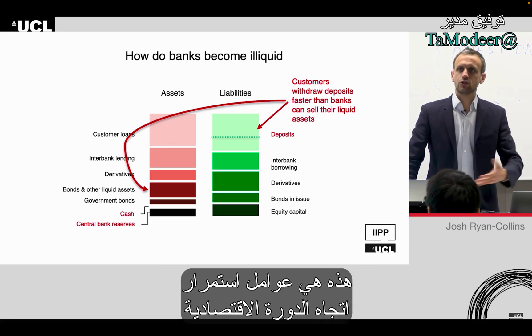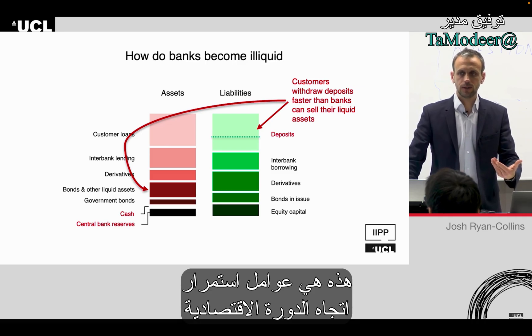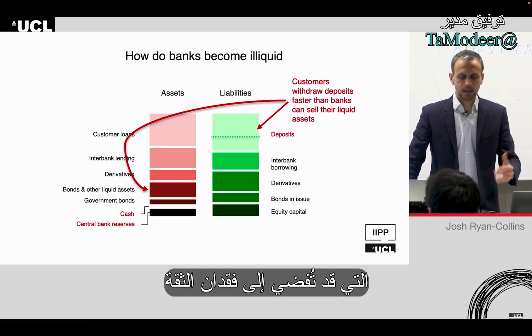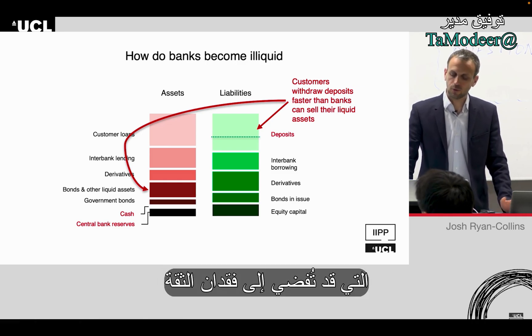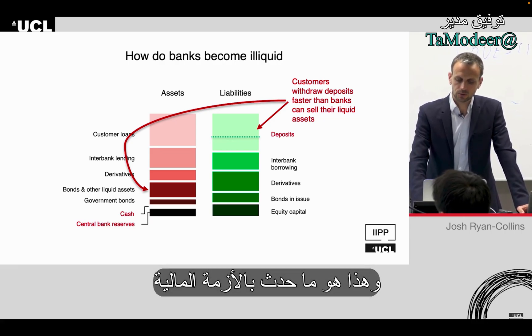You get very strong pro-cyclical, self-reinforcing dynamics that can lead to this loss of confidence — which is exactly what happened during the financial crisis.